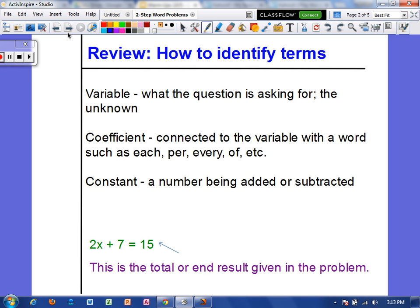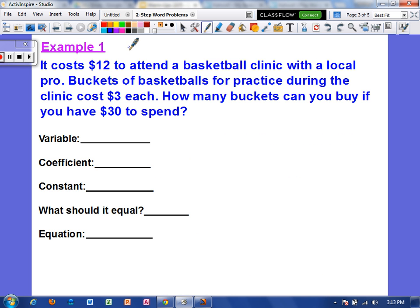So let's do an example together. It costs twelve dollars to attend a basketball clinic with a local pro. Buckets of basketballs for practice during the clinic cost three dollars each. How many buckets can you buy if you have thirty dollars to spend? Let's identify what the question is asking for. It wants to know how many buckets you can buy, so we want to know the number of buckets. I'm going to represent that with the letter B.